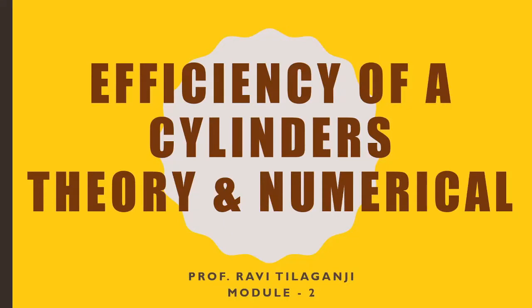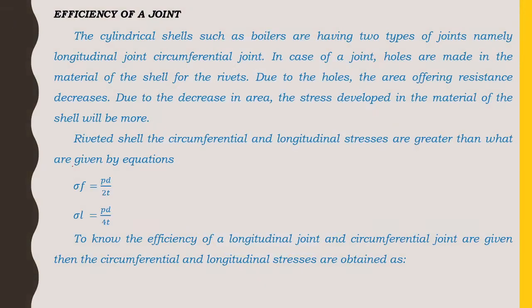Welcome to the Strength of Materials - Efficiency of Cylinders theory and numerical. In this video we will see related to the efficiency of joints in cylindrical shells such as boilers, which have two types of joints: longitudinal joint and circumferential joint.